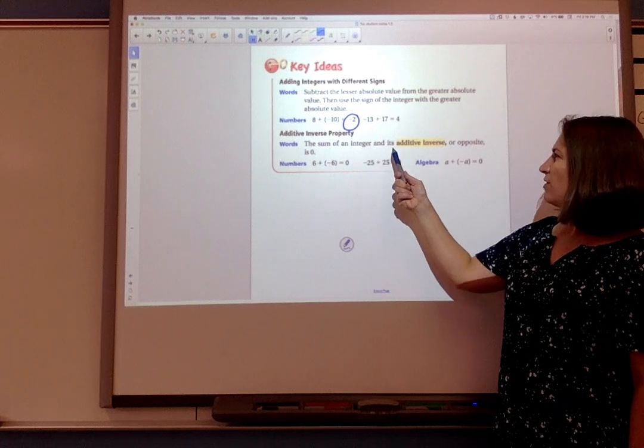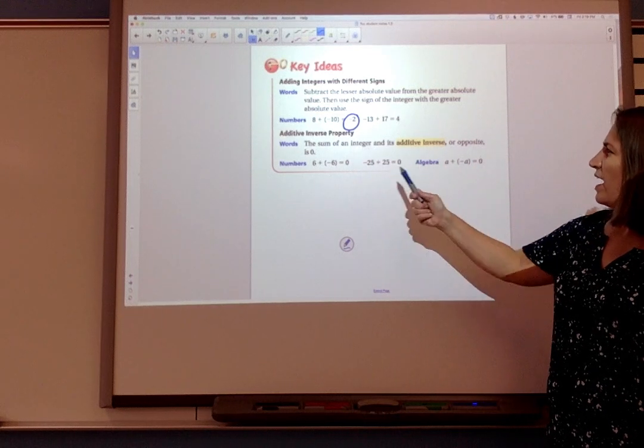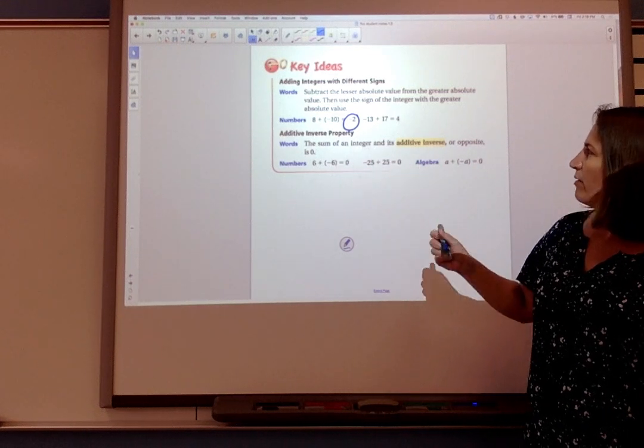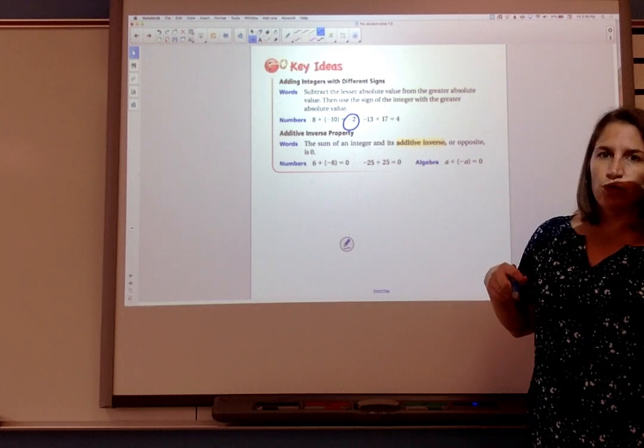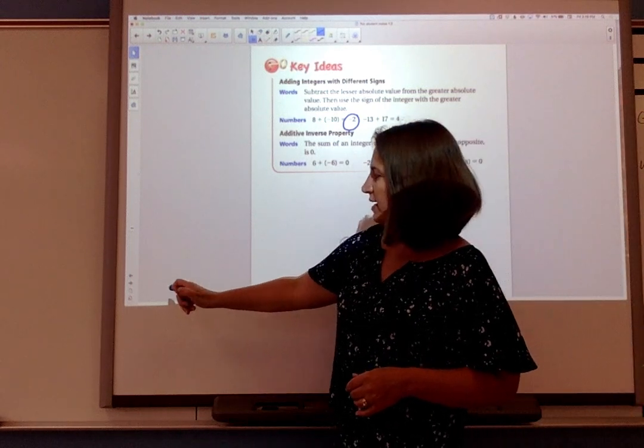Okay so the sum of an integer and its additive inverse or the opposite is 0. We already talked about that and now we've got our rule for adding integers with opposite signs.